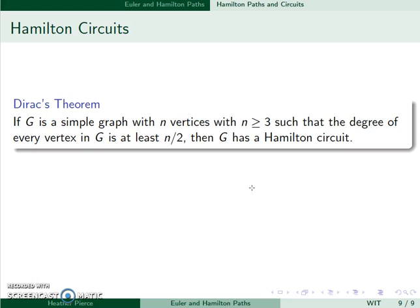There are a couple of things that can help us. If G is a simple graph with n vertices, n greater than or equal to 3, such that the degree of every vertex is at least n over 2, then G has a Hamilton circuit. So what this means is if I look at the number of vertices in the graph, and I divide that number by 2, and everything has a degree greater than or equal to that number, it definitely has a Hamilton circuit. However, just because this condition fails does not mean I am lacking a Hamilton circuit.